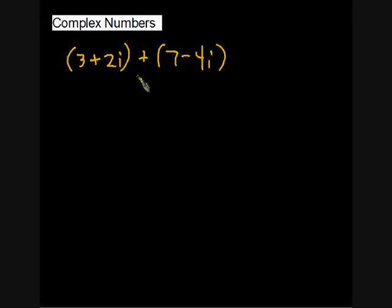Let's look at some other neat tricks we can do with complex numbers. Let's try to add a couple complex numbers. We'll add the real part with the real part, 3 plus 7.